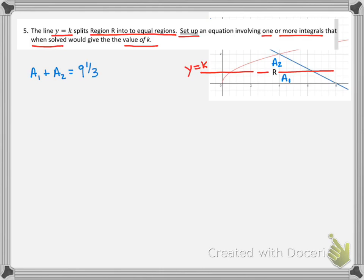Or we could even say, hey, if I take area one, that's equal to nine and a third divided by two. That would be fine too. I'm going to go with that method just because it's simpler. And so that means we really just need an integral that would represent area one.